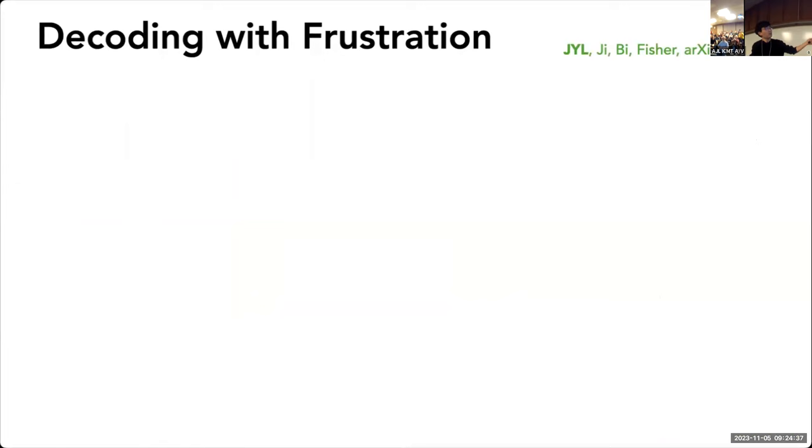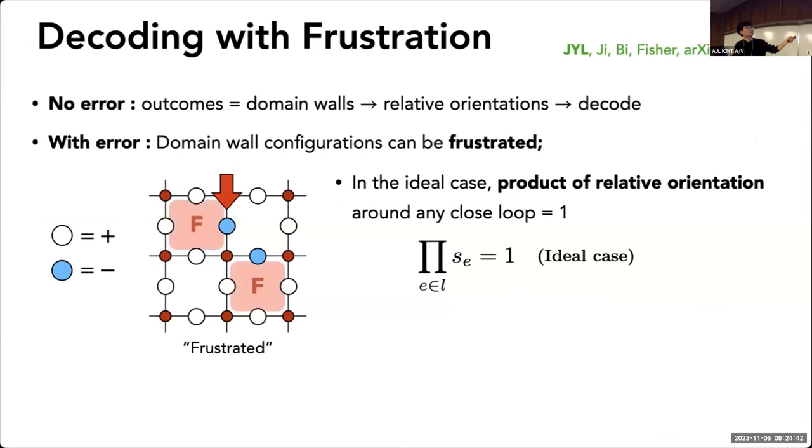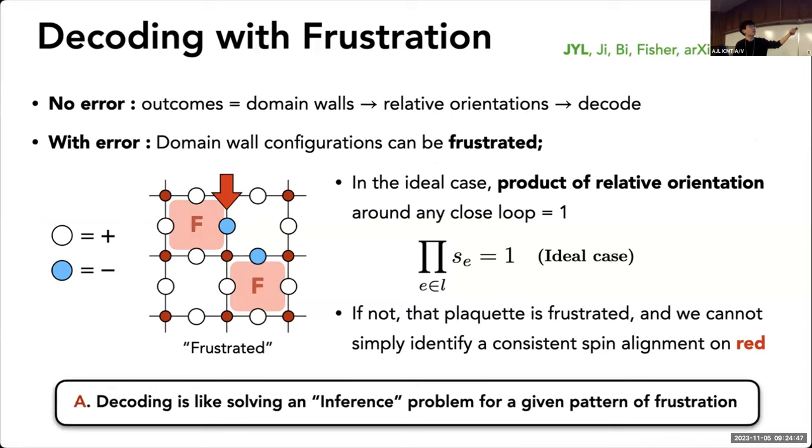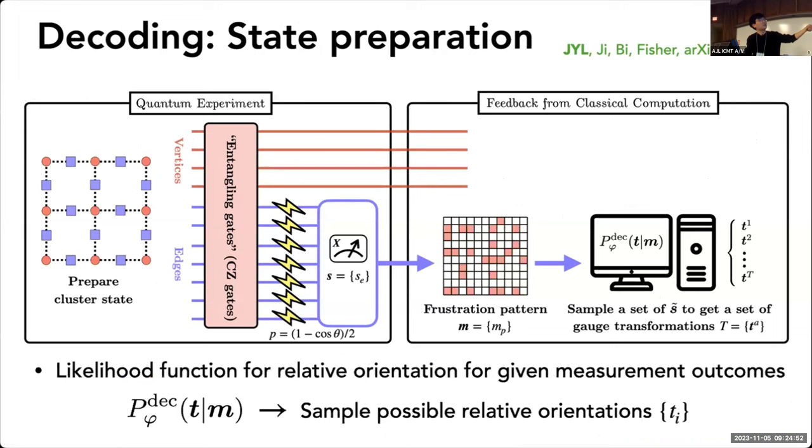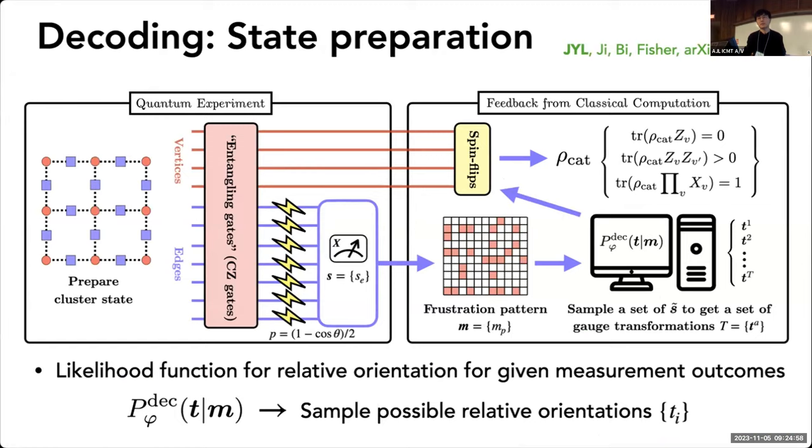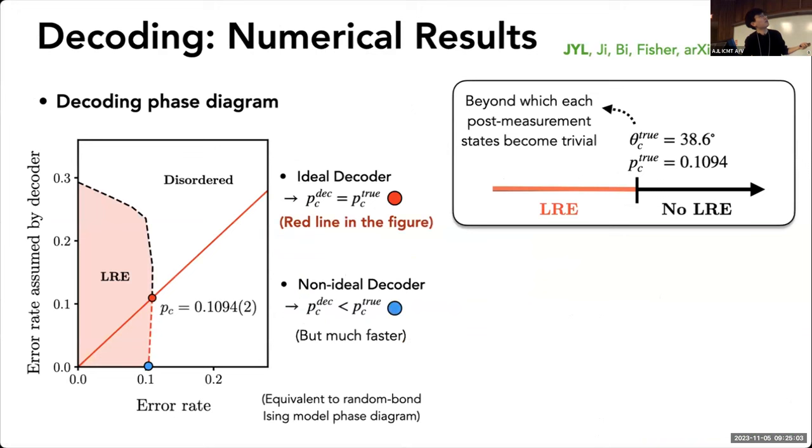Decoding can be done in a similar fashion. Let me skip that. But the problem is there's frustration, so you have to do Bayesian inference to figure out what the red qubits are. Experimentally, you can do something to really get the cat state entanglement out of this when there's decoherence. But for the sake of time, let me skip this quickly.